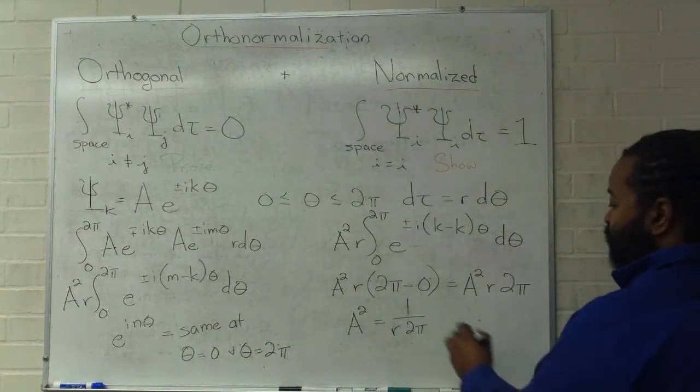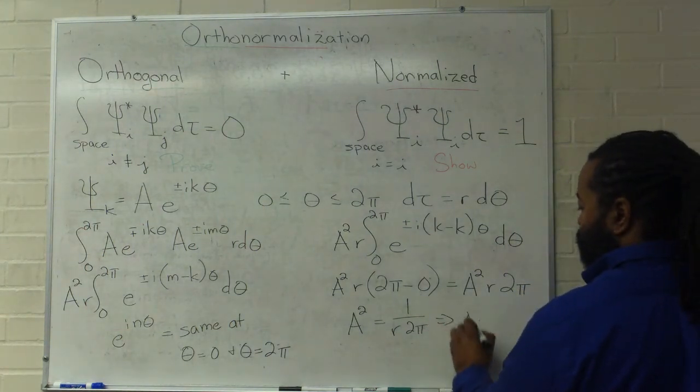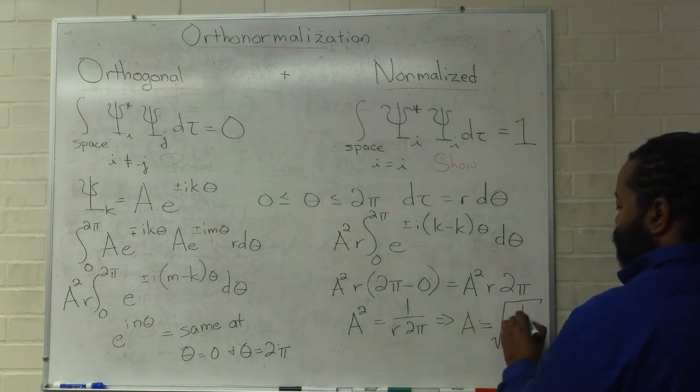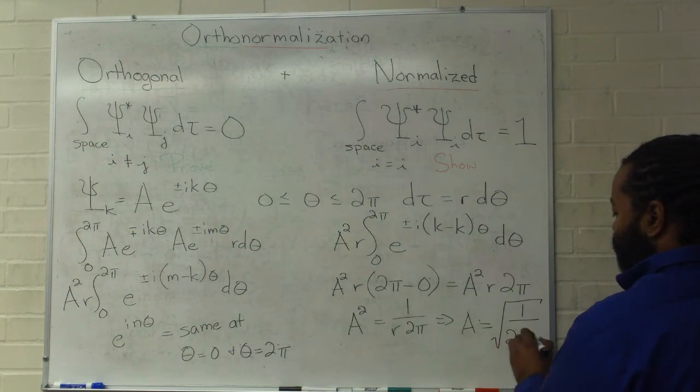And, at this point, we just take a square root, and so a is going to be the square root of 1 over, and I'll just rewrite this as 2 pi r.